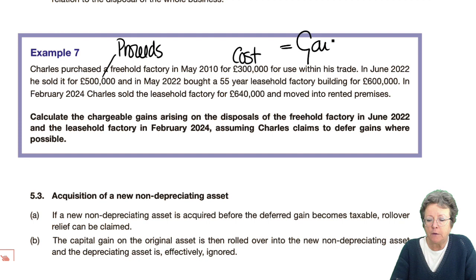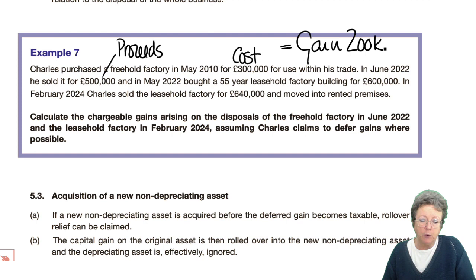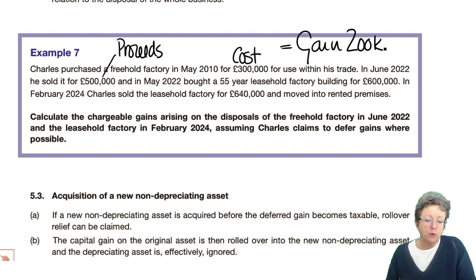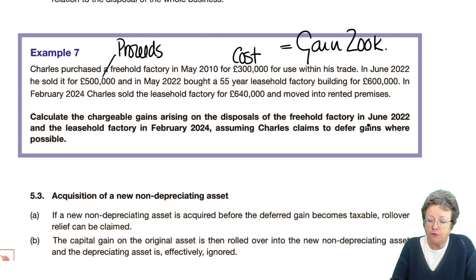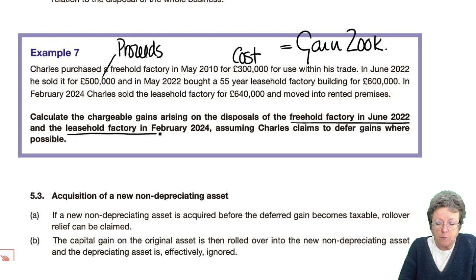In May 2022 he bought a 55-year leasehold factory — so it falls within the conditions for a depreciating asset — for £600,000. He then sold that factory in February 2024 for £640,000 when he moved into rented premises. We need to calculate the gains arising on the disposal of the freehold factory in June 2021 and the leasehold factory in 2024.